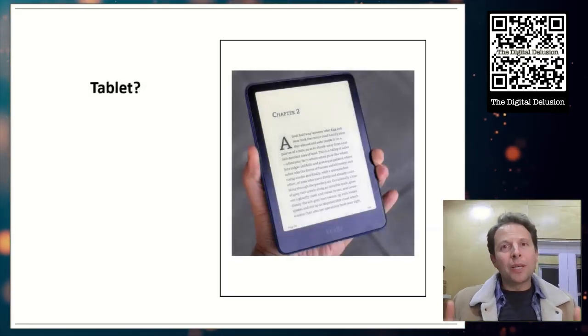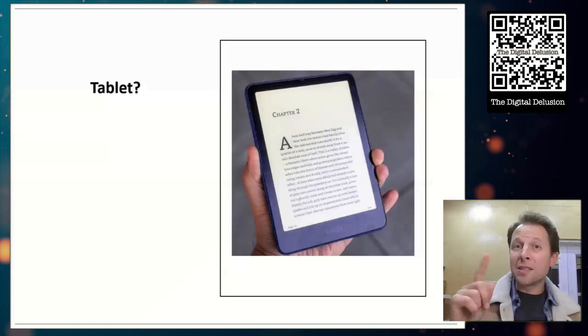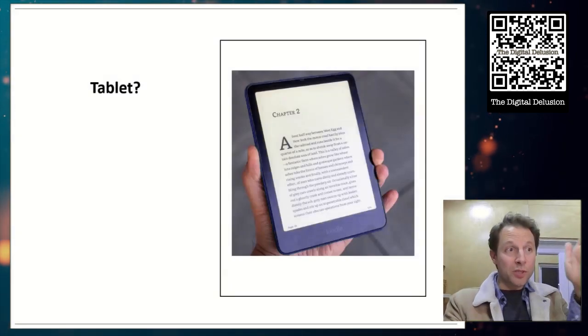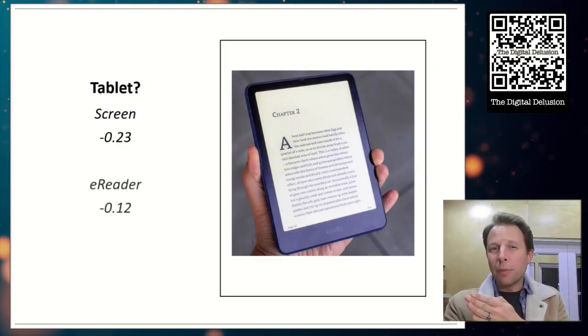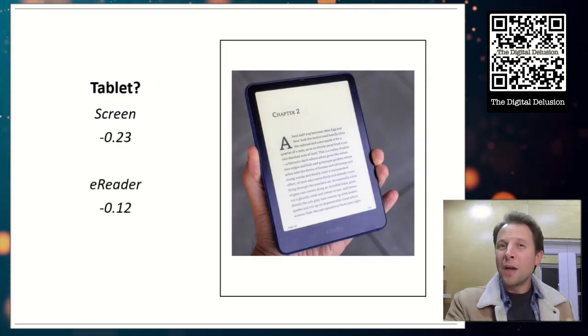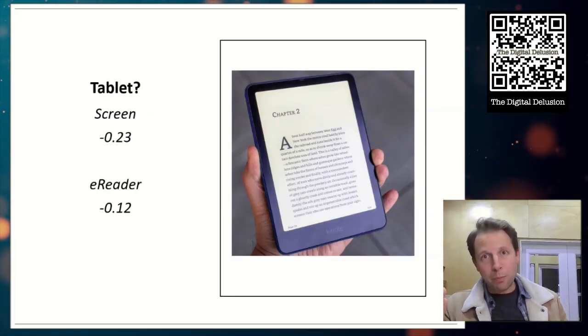And somebody asked me the other day, well, what about Kindles, where you can flip through the pages on Kindle? Well, only one big analysis has been done on this, and what they found was screens compared to hardcopy were negative 0.23, and Kindles compared to hardcopy were about negative 0.12. So not as bad as scrolling on a screen, but still not as good as having the book in your hand.